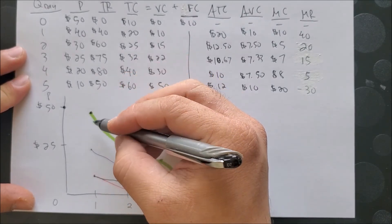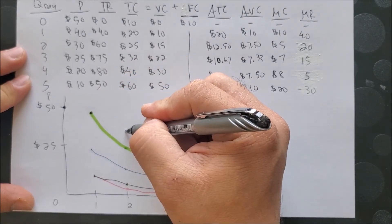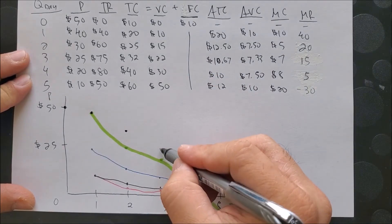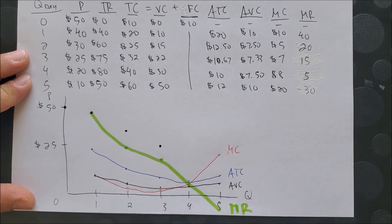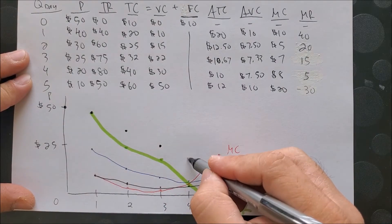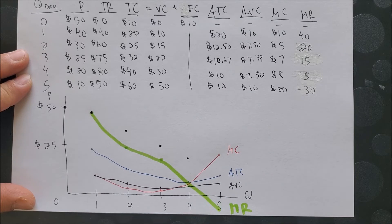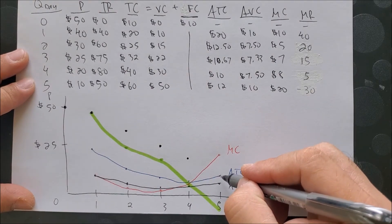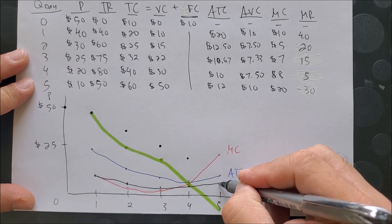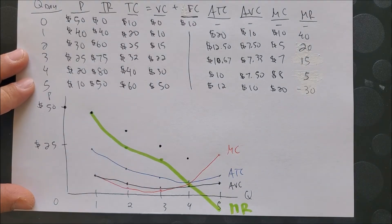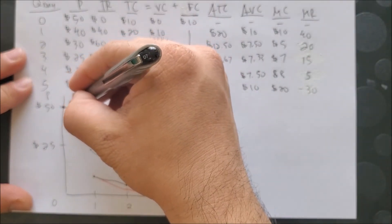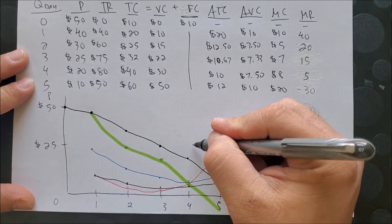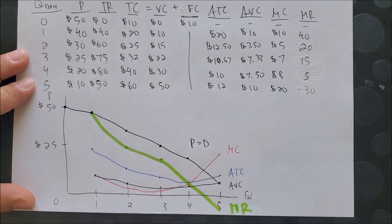2 and 30, 3 and 25, 4 and 20, 5 and 10 somewhere around here, and draw our demand curve. Put here PRICE, which is the demand curve.